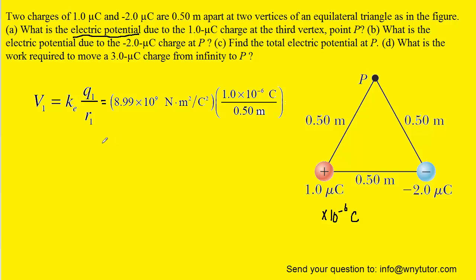When we plug in all the known values and compute the answer, we get a value of approximately 1.8 times 10 to the positive 4. And the unit we can use for electric potential is just volts. So this would be the correct answer to part A.